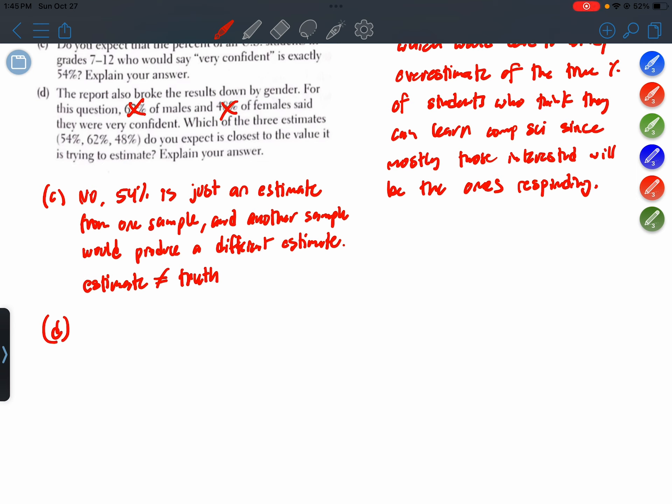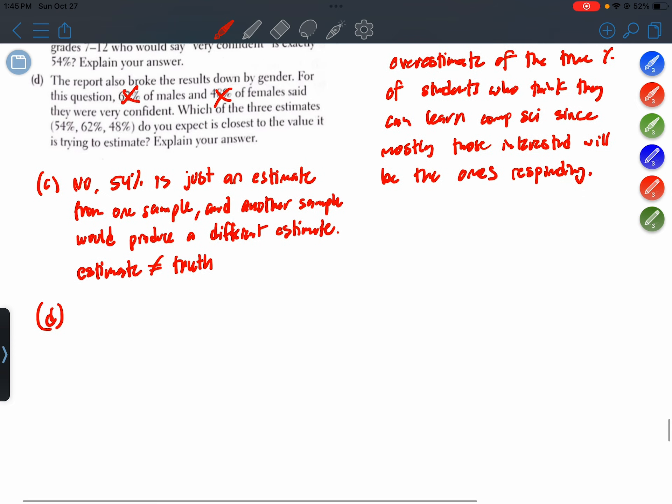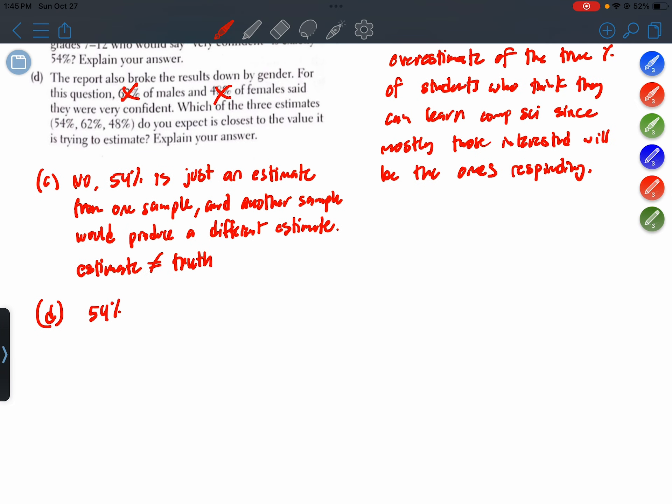So it would have to be the 54 percent, right? That came from the sample that contained both males and females. Okay, so 54 percent is the best estimate since it came from a sample that is representative of the population, whereas neither an all-male sample nor an all-female sample would be representative.